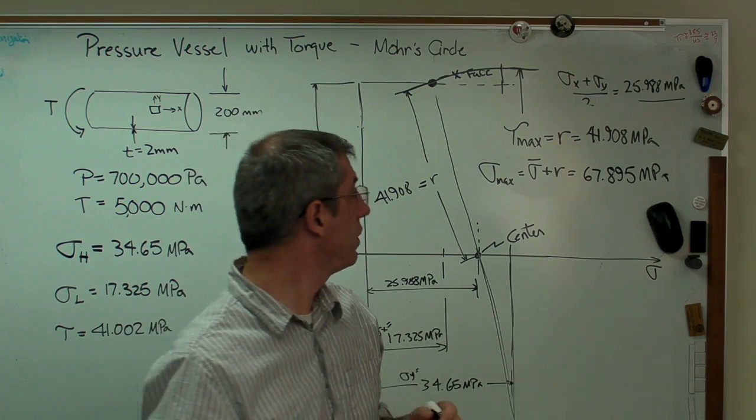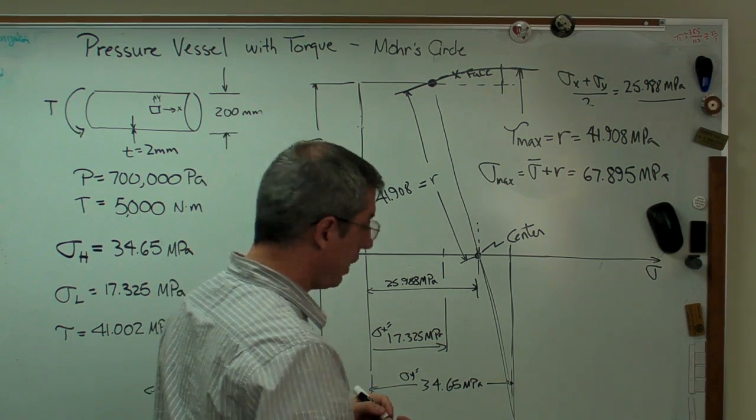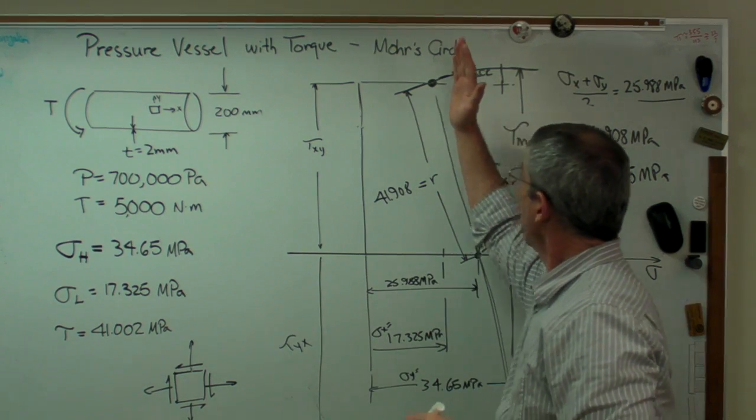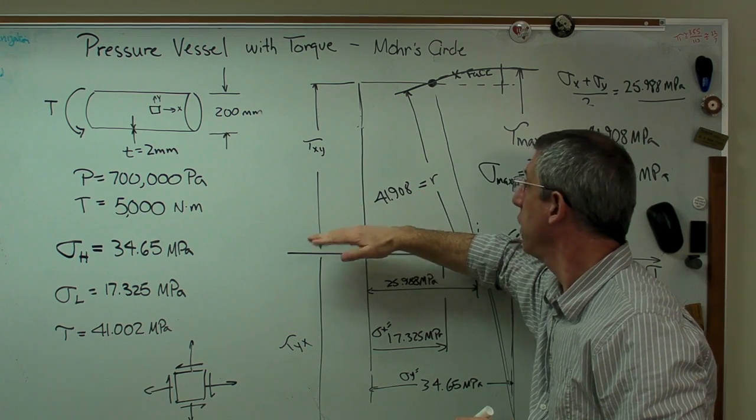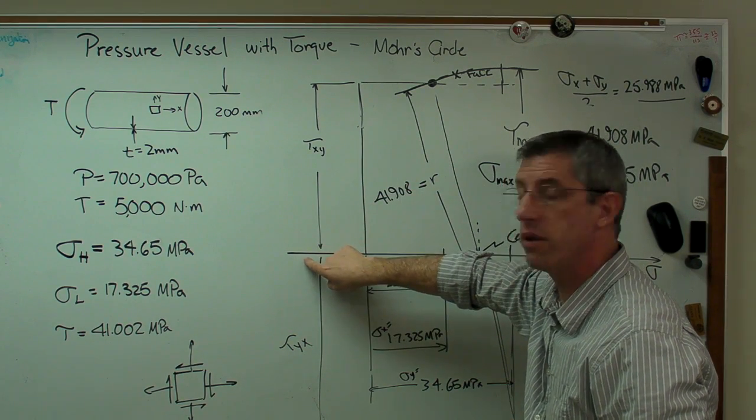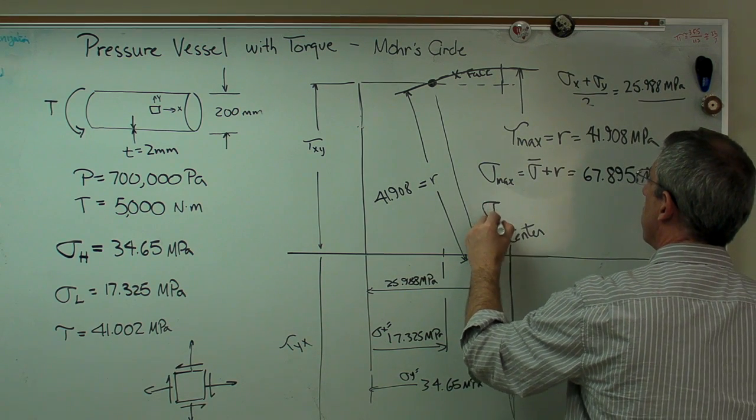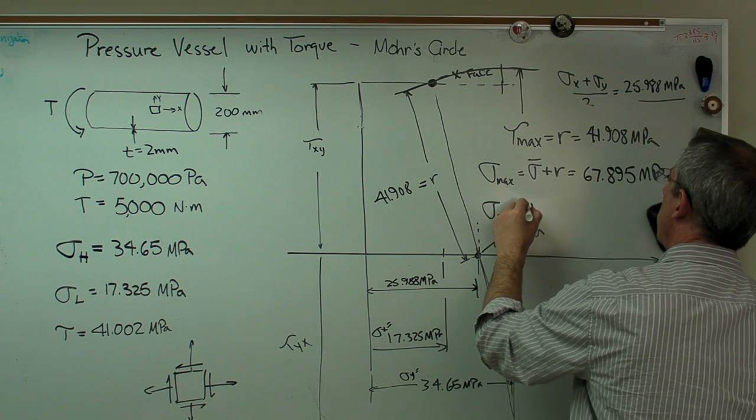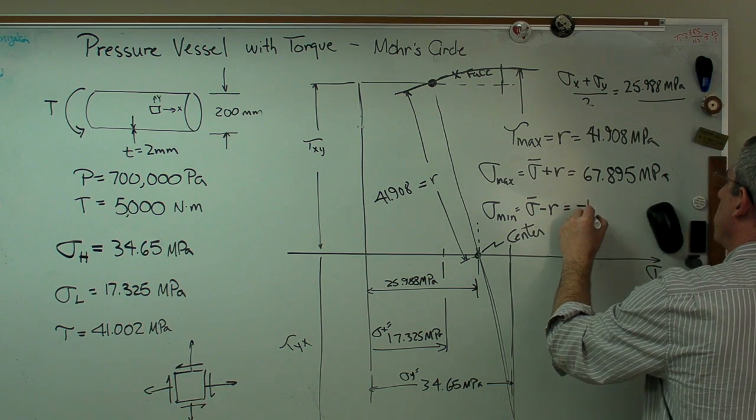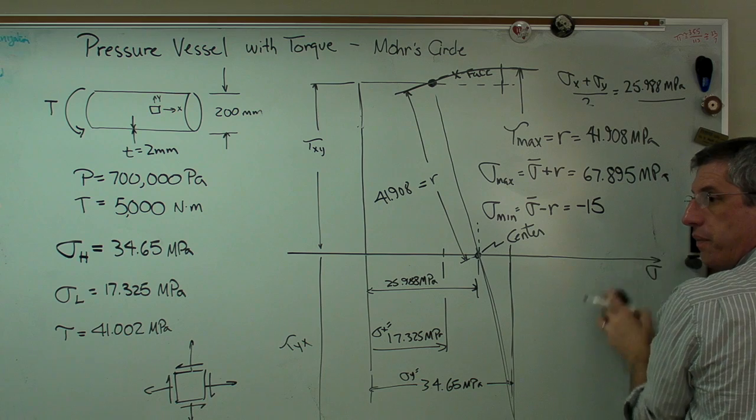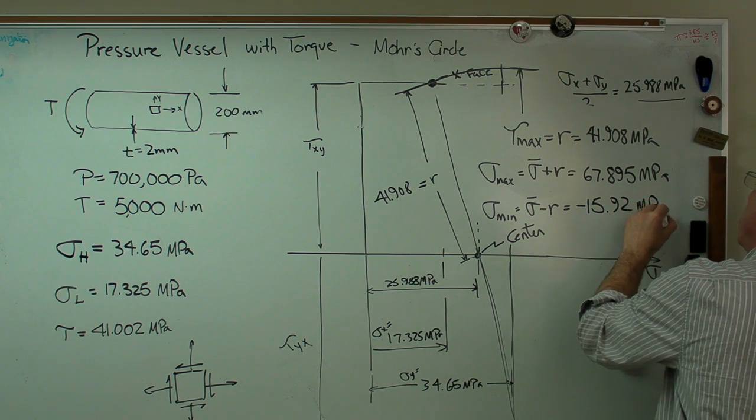Last thing I might want to know is sigma min, the minimum value of the normal stress. Well, we'll do the exact opposite here. We'll start right here, the center and the radius, and just rotate this down to find out where this point crosses the sigma axis again. That is, sigma min equals sigma bar minus the radius, and if we do that calculation, it comes out to minus 15.92 megapascals.